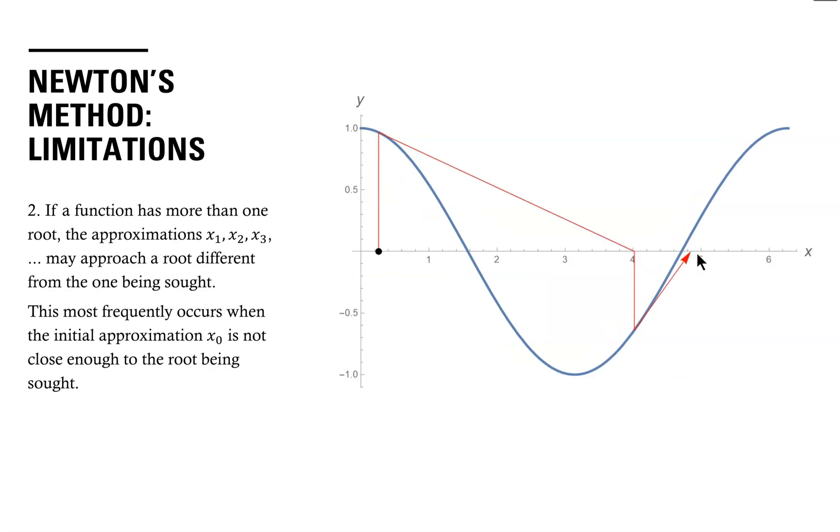A second limitation occurs when a function has more than one root. We can see on the graph here that this function has a root at a and also has a root at b. And if we were searching for this root a and started with this initial approximation, let's call that x0.